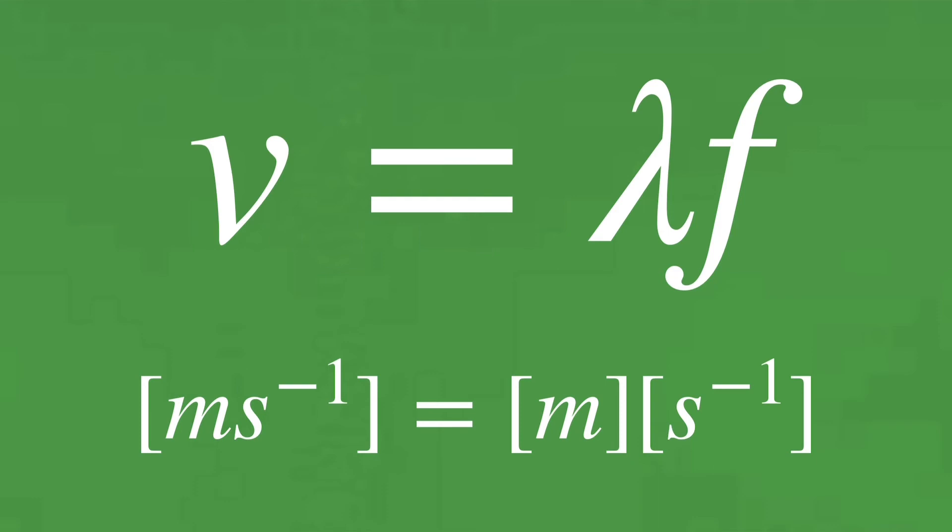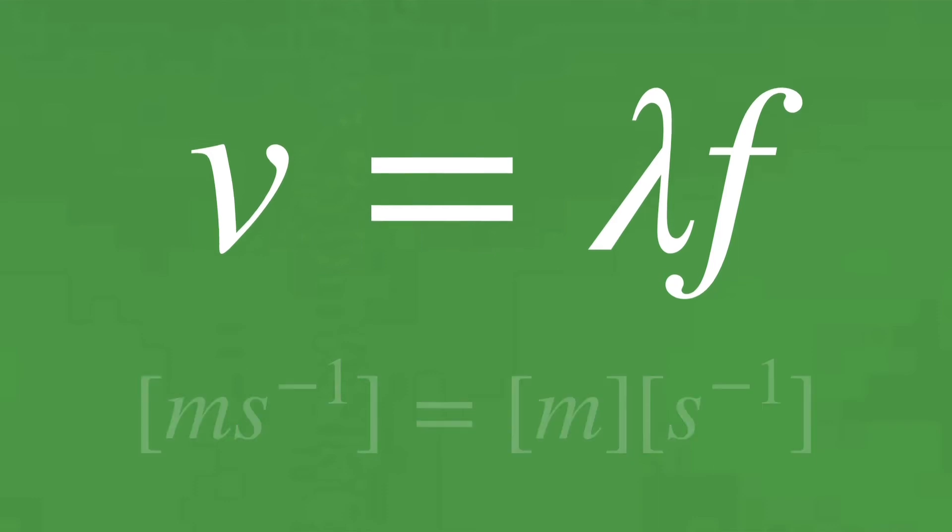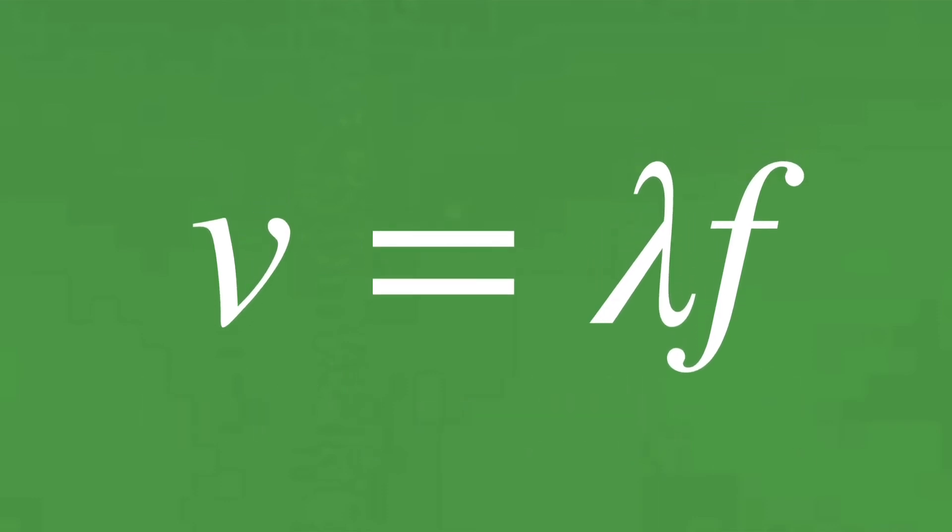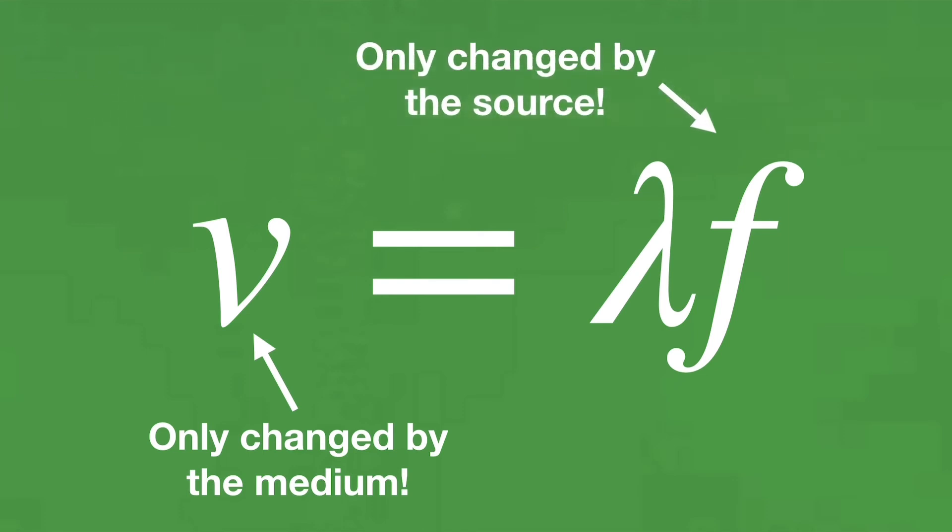The most important thing to remember about this equation is the speed of a wave is determined by the medium. It is absolutely not changed if the frequency or wavelength change. Similarly, the frequency is determined by the source,